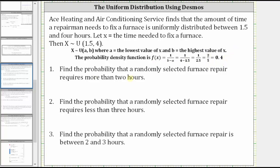Number one, we're asked to find the probability that a randomly selected furnace repair requires more than two hours — this is the probability that x is greater than two. Number two, we're asked to find the probability that a randomly selected furnace repair requires less than three hours, which is the probability that x is less than three. Number three, we're asked to find the probability that a randomly selected furnace repair is between two and three hours, which is the probability that x is greater than two and less than three.